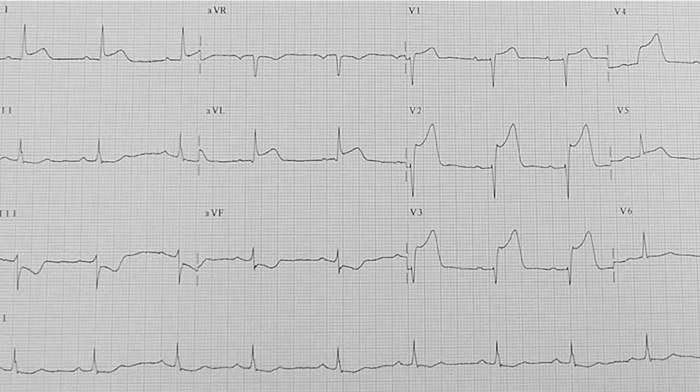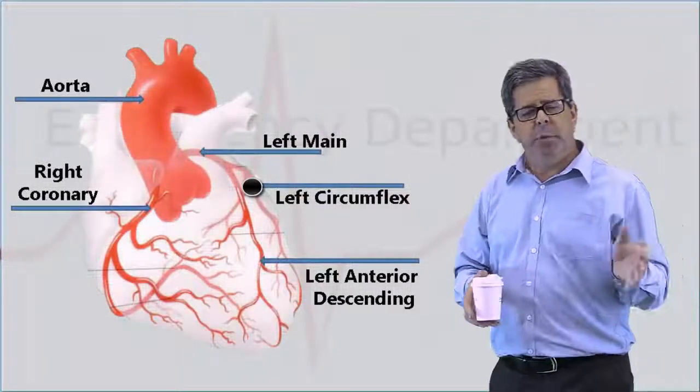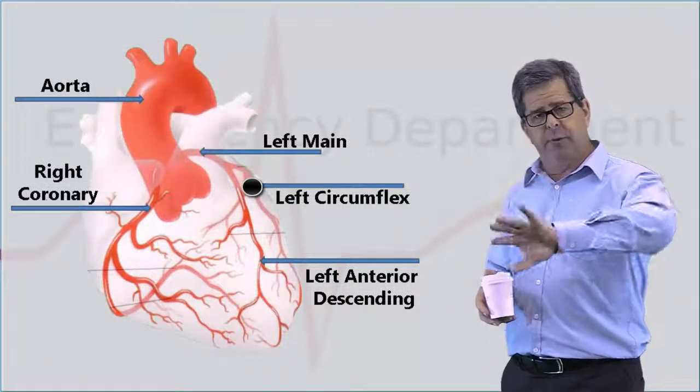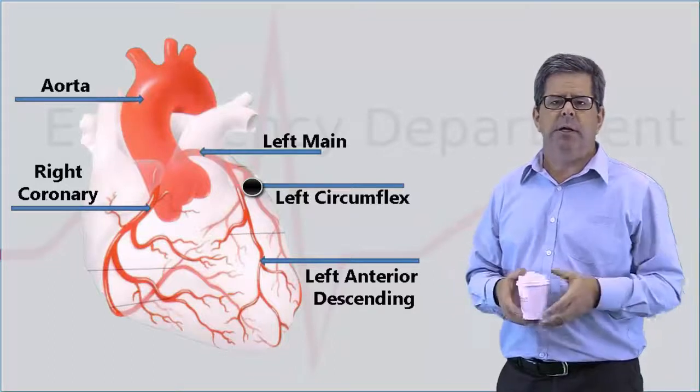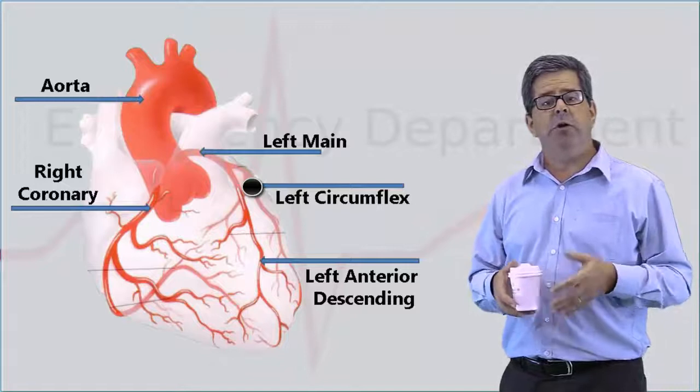What about if we actually obstructed the left circumflex just around here? Well here it supplies the lateral aspect of the heart, of the left ventricle. So not surprisingly, it's less of the ventricular mass and therefore you don't tend to come in with cardiogenic shock and pulmonary edema.